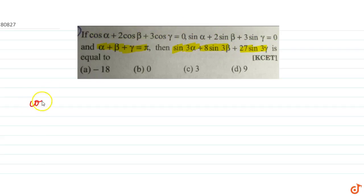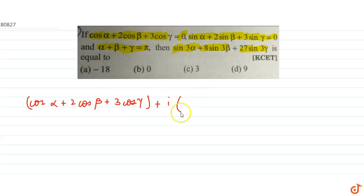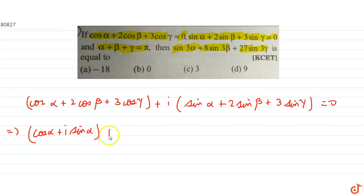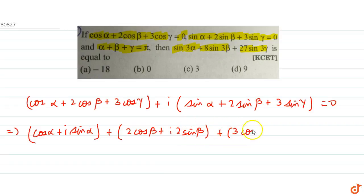Using these two equations, we can write: cos alpha plus 2 cos beta plus 3 cos gamma plus iota times of sin alpha plus 2 sin beta plus 3 sin gamma equals 0, since both quantities equal zero. We can rewrite this as: cos alpha plus iota sin alpha, plus 2 cos beta plus 2 iota sin beta, plus 3 cos gamma plus 3 iota sin gamma, equals 0.